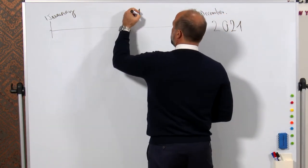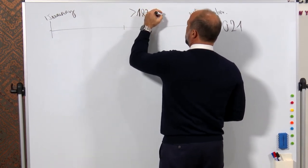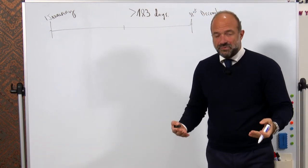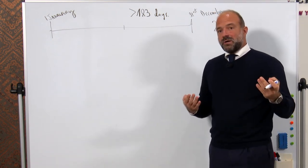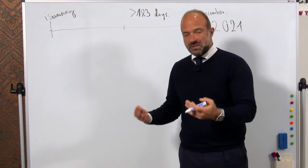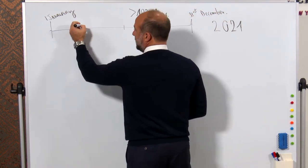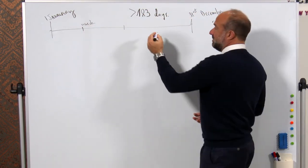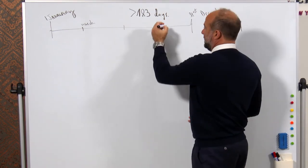I'll write it down here: 183 days — more than this is the general rule. If you live more than 183 days in Spain then you become tax resident. There are situations where someone arrived and obtained residency at the beginning of the year — for example in March — and others who started residency with a TIE in, let's say, November.